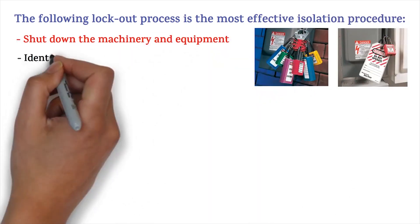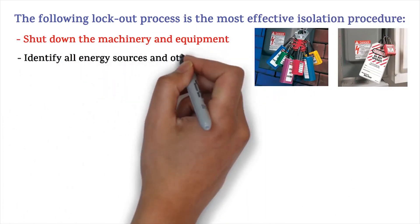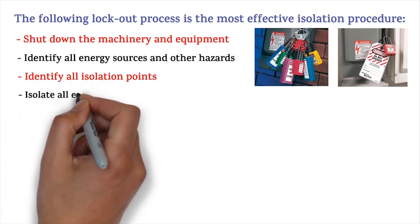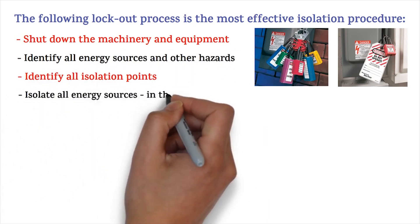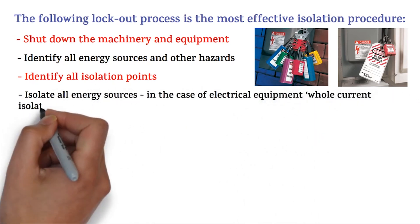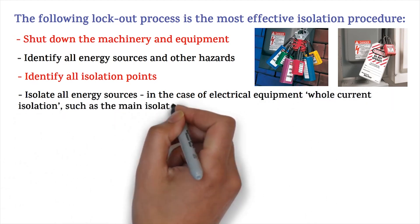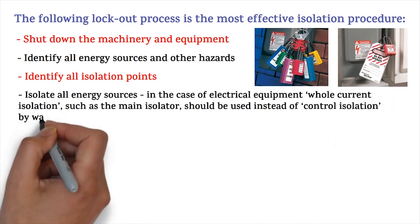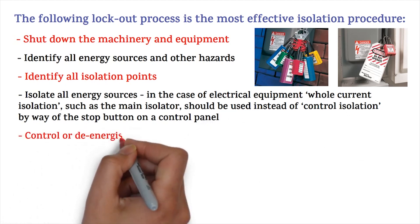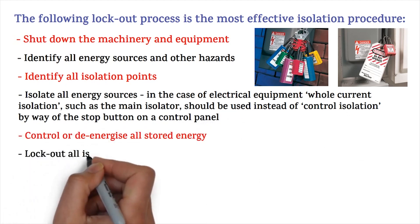The following lockout process represents the most effective isolation procedure: shut down the machinery and equipment, identify all energy sources and other hazards, identify all isolation points, isolate all energy sources. In the case of electrical equipment, a current isolation such as the main isolator should be used instead of controls isolation by way of the stop button on a control panel.